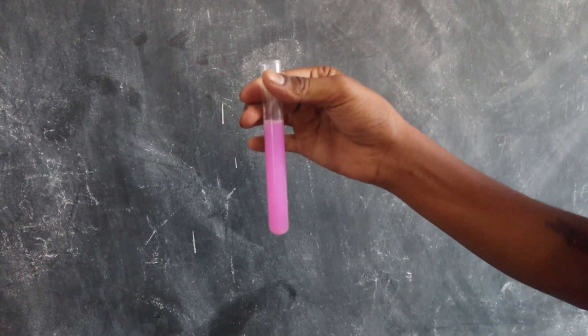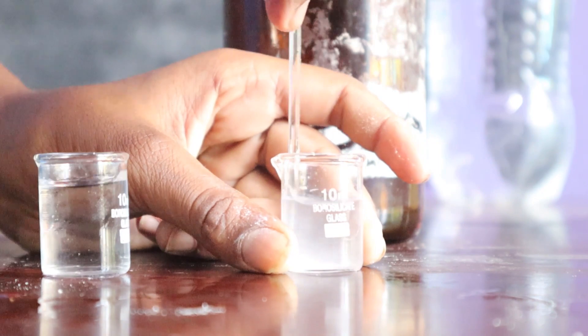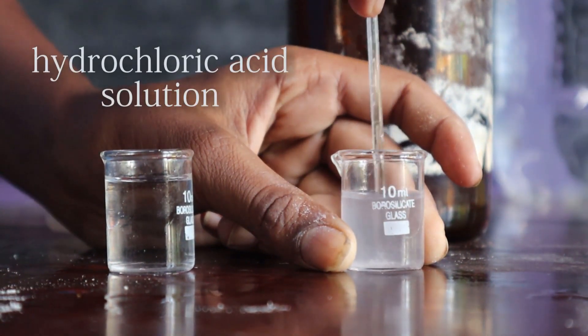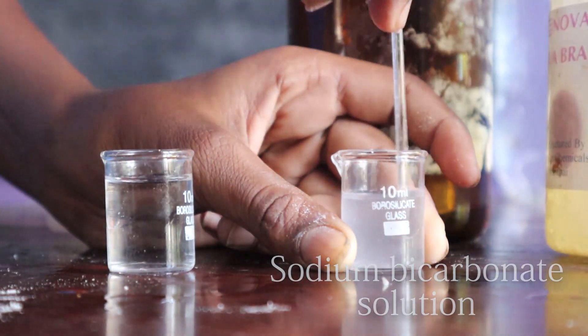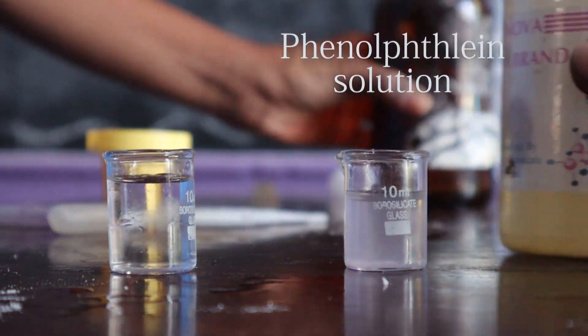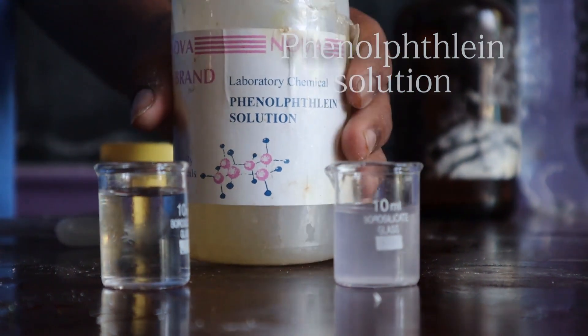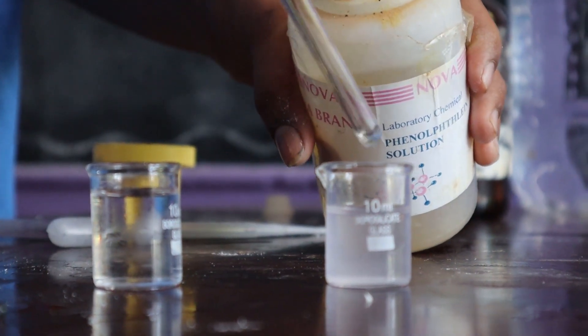This reaction looks beautiful when we conduct it with the help of beakers. This is the acid solution, meaning hydrochloric acid solution. This is the alkaline solution, meaning sodium bicarbonate solution. Now phenolphthalein is added to both beakers. The acid shows no color change, whereas the base solution turns pink.